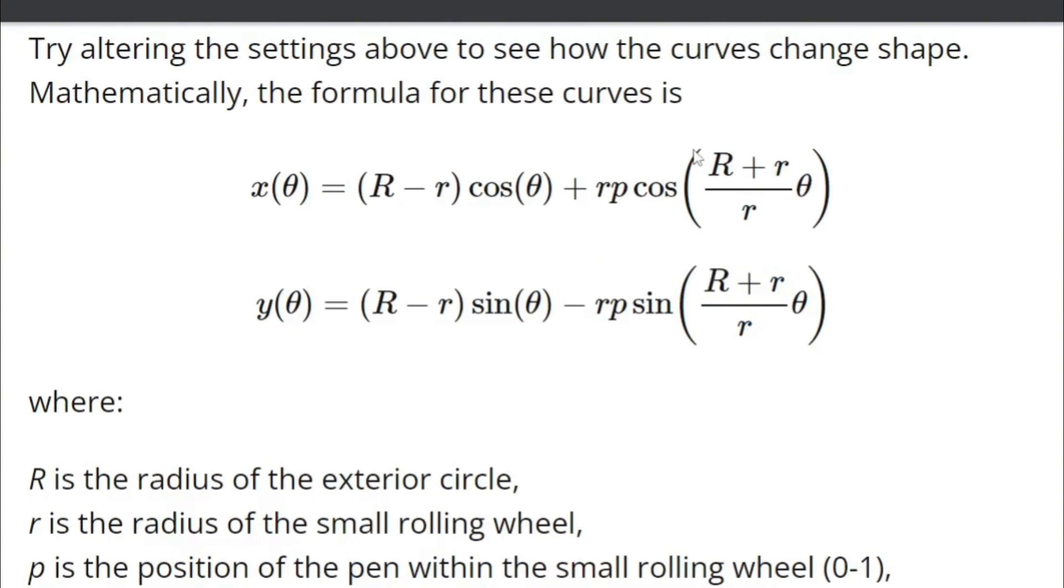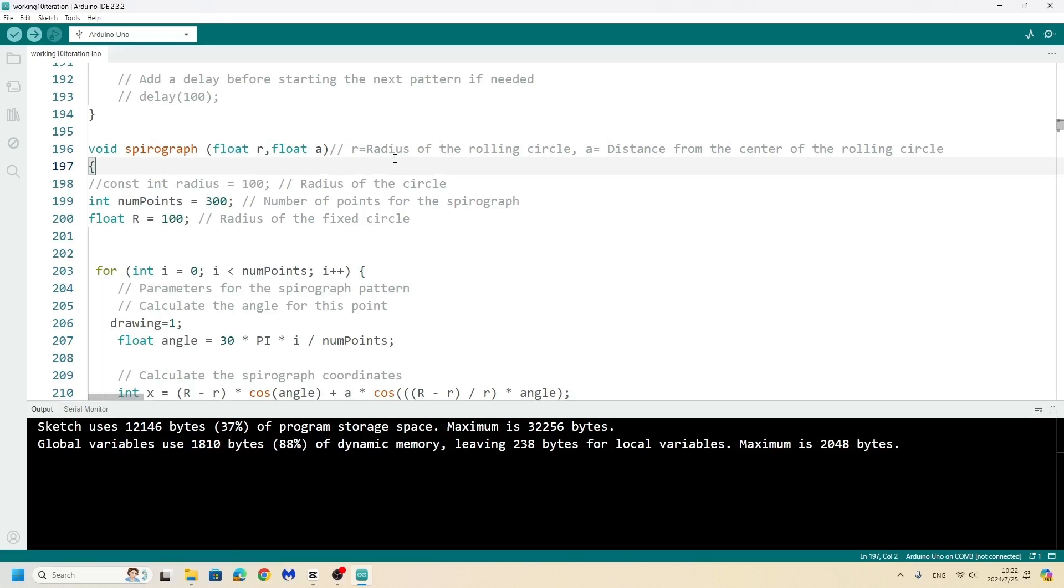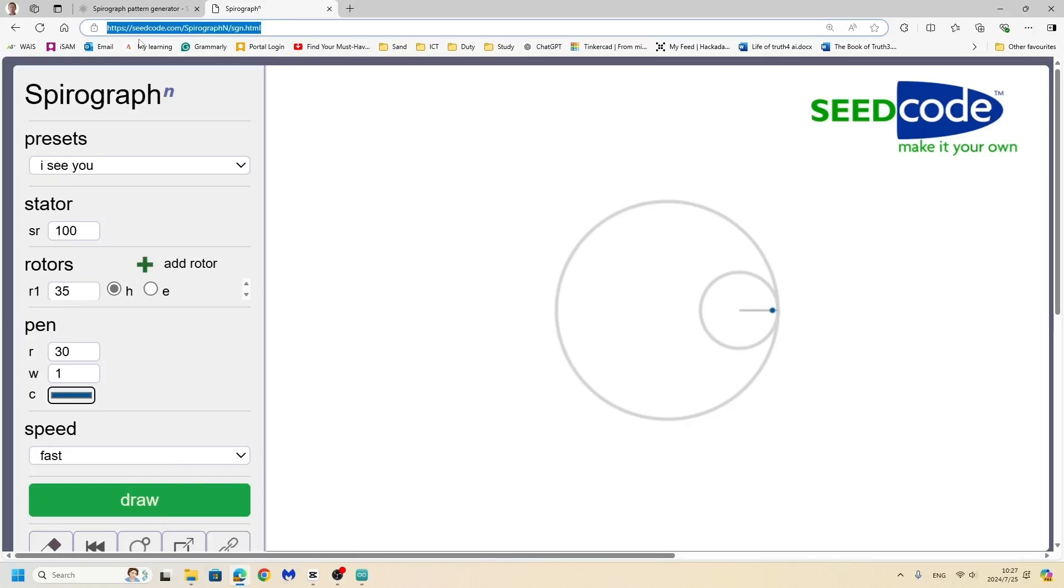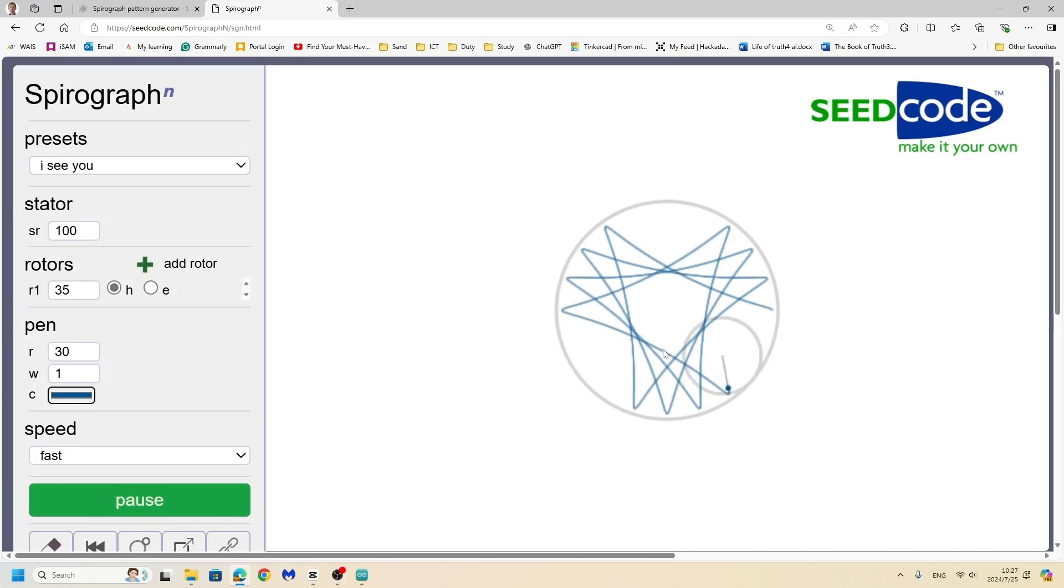If you look online, there's actually functions that give you the x and y coordinates for a spirograph. I made a spirograph function where you can feed in the radius of the smaller circle rotating. That's the same equation right here that I inputted.